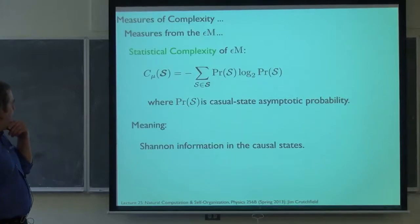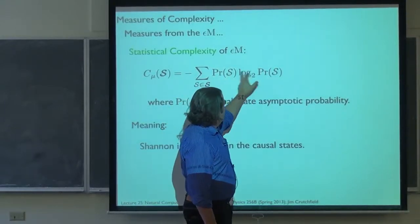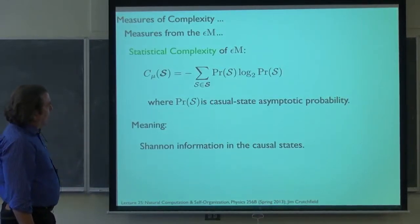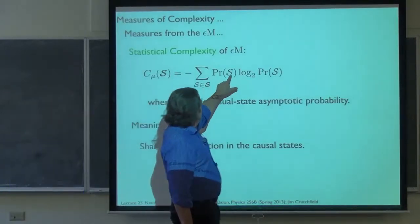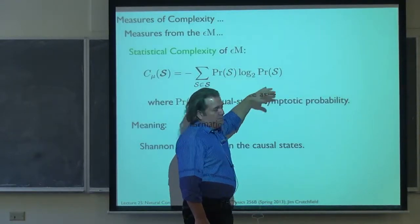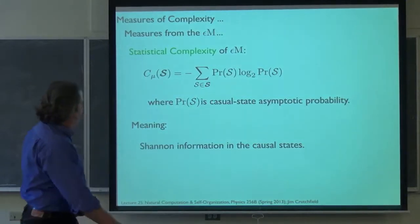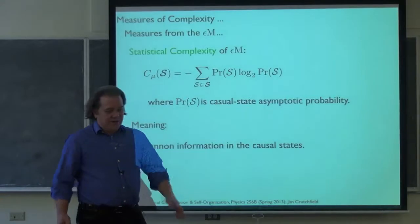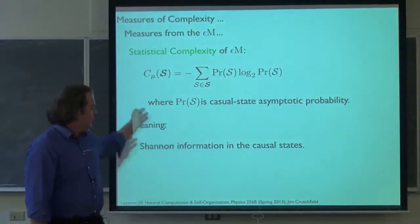We have the sort of size of the epsilon machine: the statistical complexity. We know how to calculate the asymptotic causal state probability distribution, and the Shannon information in that distribution is the statistical complexity. As we were developing things, it's sort of like the size of the model. If the causal states were uniformly probable, then this would just be the log of the number of states. It's the Shannon information in the causal states — in other words, a process is rattling around and if I say 'it's in state D,' that's your average uncertainty as you're trying to predict the process.